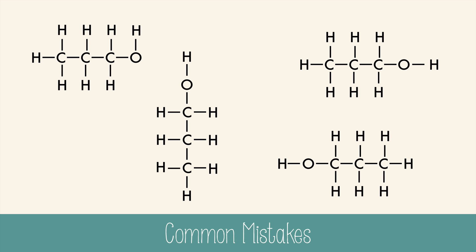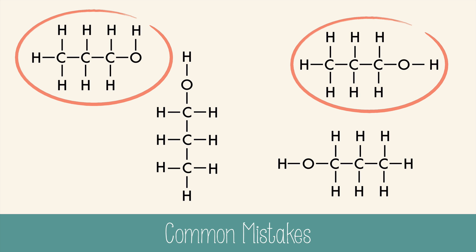Now, it's important to be careful that you don't make some common mistakes when drawing isomers. All four of these molecules here are exactly the same isomer. This one seems different from the other one, because the hydrogen appears to be in a different position, but it represents the same spot.